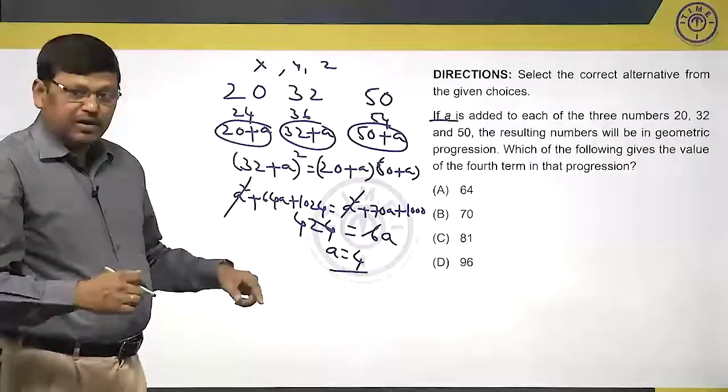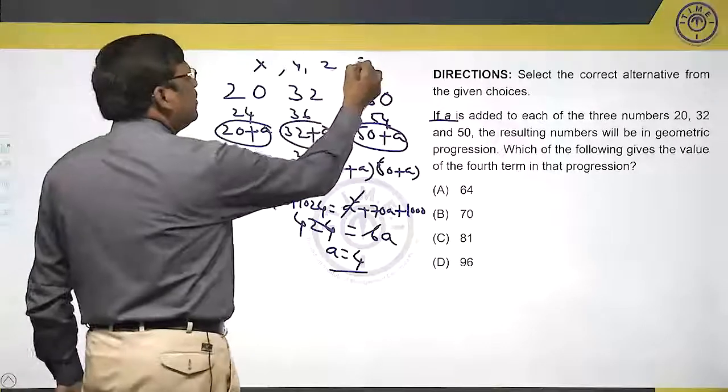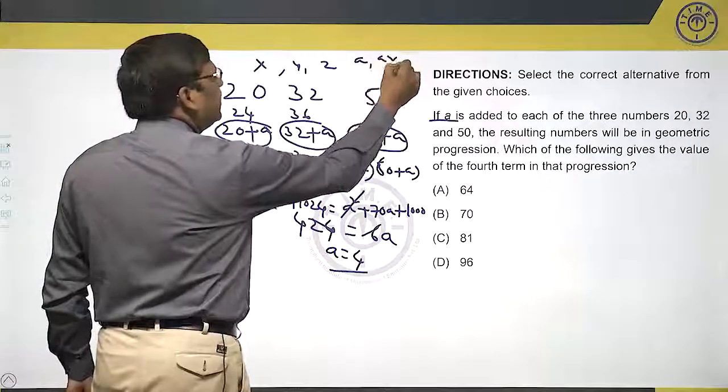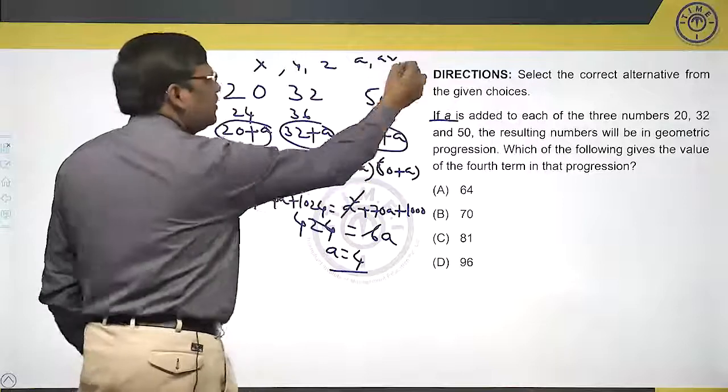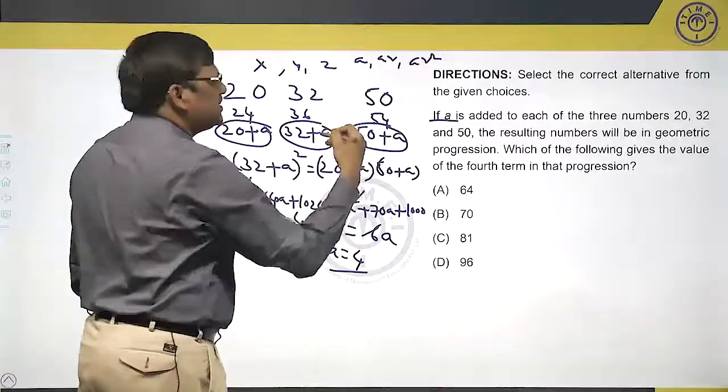If you see here, the geometric progression will be in the form of A, A r, A r square. Every time we will be multiplying with same number.